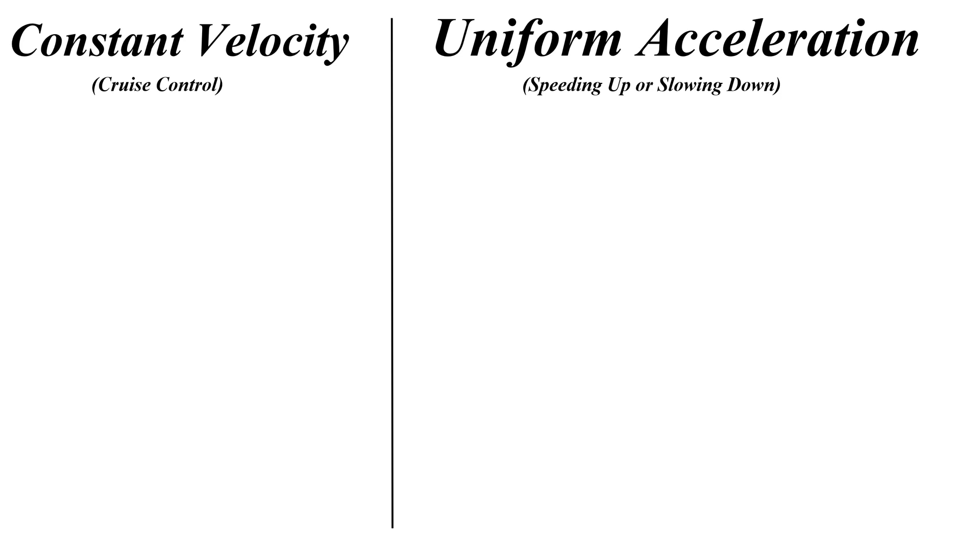Somewhere in your notebook or on a note card, write constant velocity and uniform acceleration really big in two columns, and we're going to write all of these equations down so that they're in one place. Then we can use this as sort of like a Pokedex to decide which equation we need to use in battle to be successful.